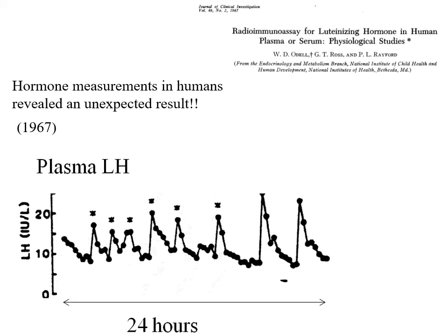What did these pulses of LH mean? The pattern showed a slow decline in the blood then a big increase, repeated over and over. What it looked as though was happening was that LH was being released from the pituitary in a big bolus, and then its level in the blood decreased with the half-life of the hormone as it was cleared — then another bolus release, another clearance, and so on.